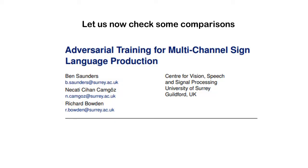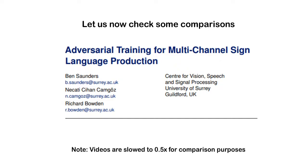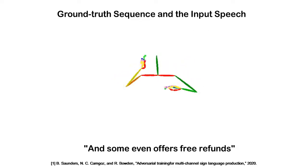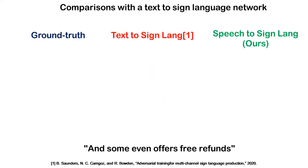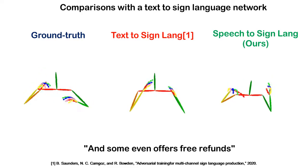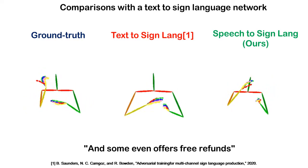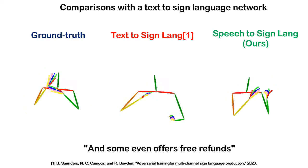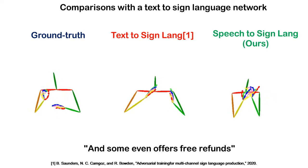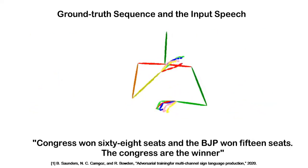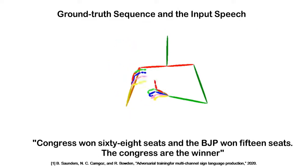Let us now check some comparisons. We compare our approach with the state-of-the-art text-to-sign-language network trained on the Indian sign language dataset. We have slowed down the videos to 0.5x speed to help with the comparison. The demonstration phrases include: 'And some even offer free refunds,' 'Congress won 68 seats and the BJP won 15 seats,' and 'The Congress are the winners.'